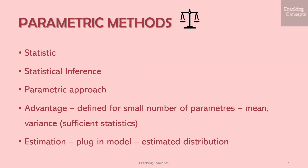The advantage of the parametric approach is that the model is defined up to a small number of parameters — for example, mean and variance — which are the sufficient statistics of the distribution. Once those parameters are estimated from the sample, the whole distribution is known. We estimate the parameters from the given sample, plug in these estimates to the assumed model, and get an estimated distribution which we then use to make a decision.